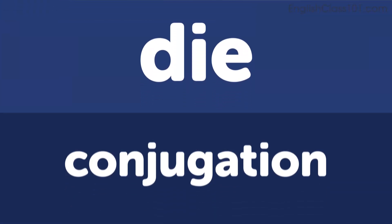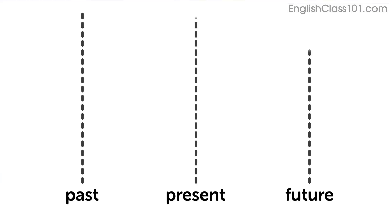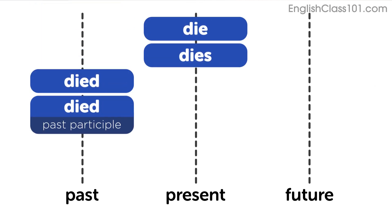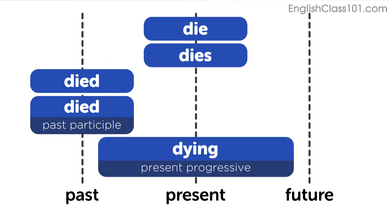Let's look at the conjugations for this verb. Present: die, dies. Past: died. Past participle: died. Progressive: dying.